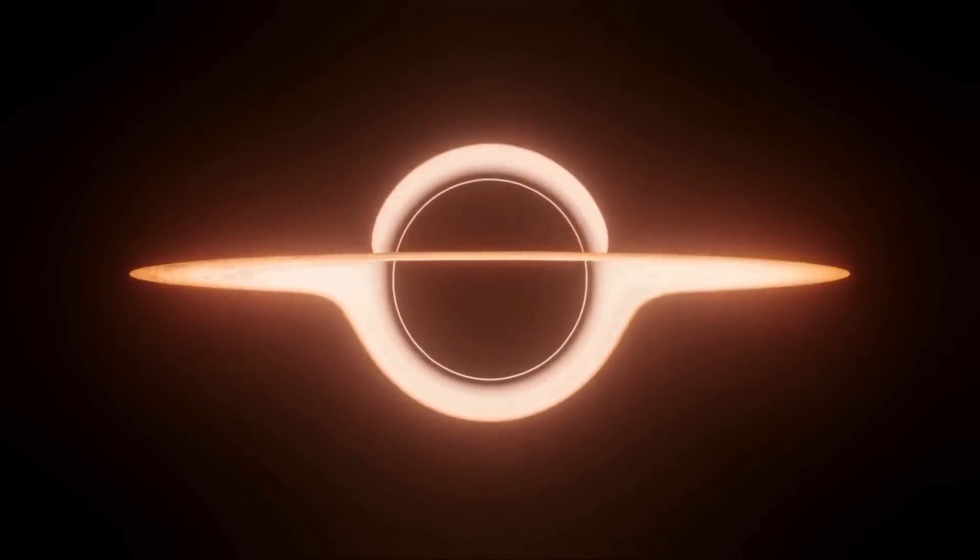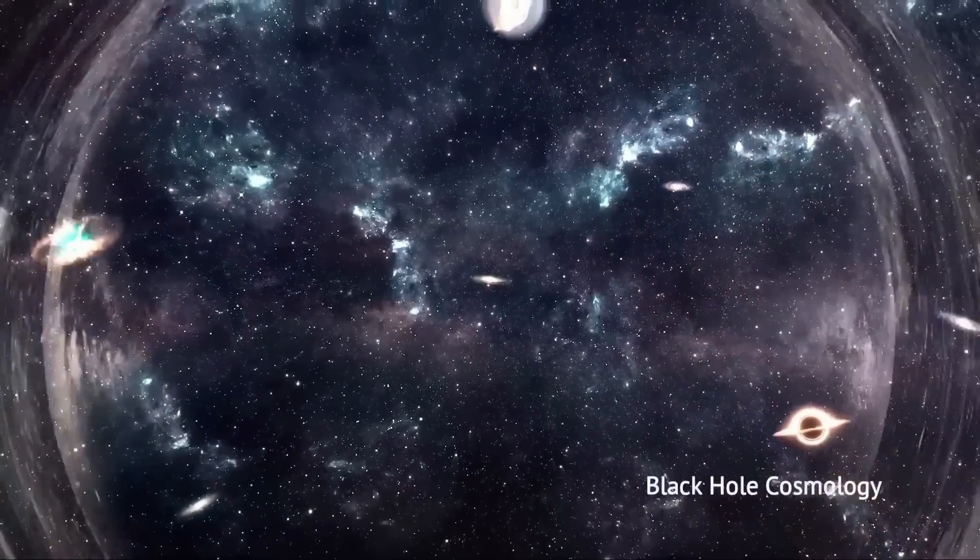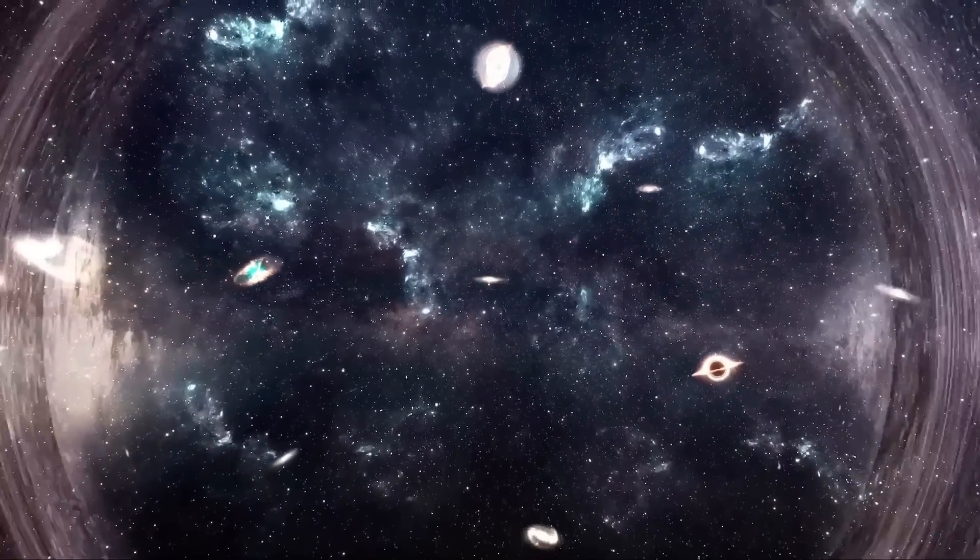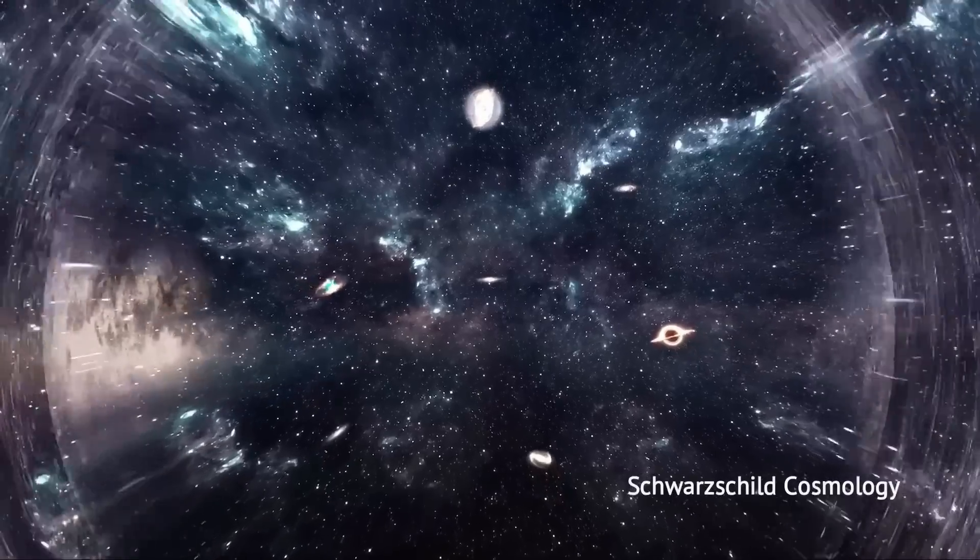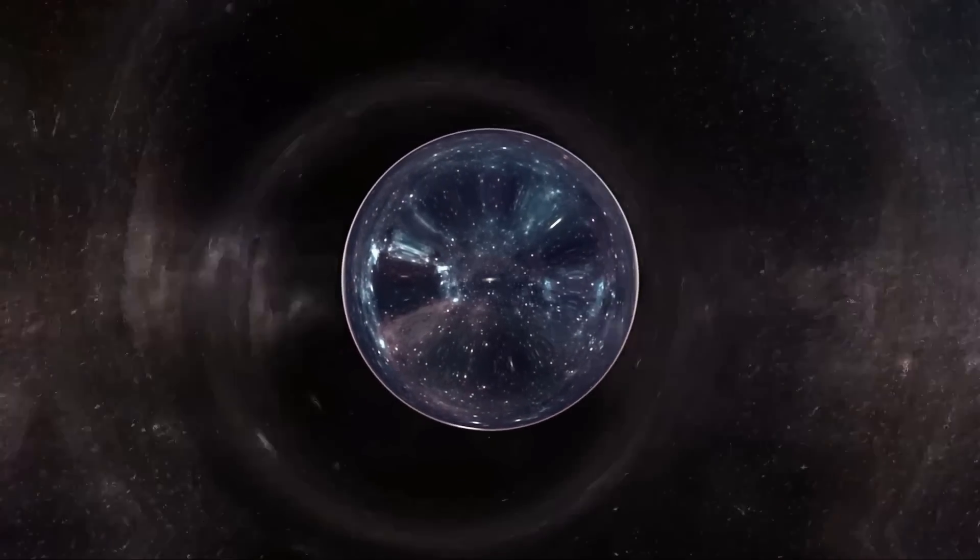To understand this, we need to look at the physics of black holes. When matter collapses under gravity to form a black hole, it creates an event horizon, a boundary beyond which nothing can escape, not even light. Anything that crosses this boundary is forever lost to an outside observer. However, what happens inside the event horizon is still a mystery. This is where black hole cosmology comes in. Also known as Schwarzschild cosmology, it suggests that our observable universe might actually be the interior of a black hole within a larger parent universe.